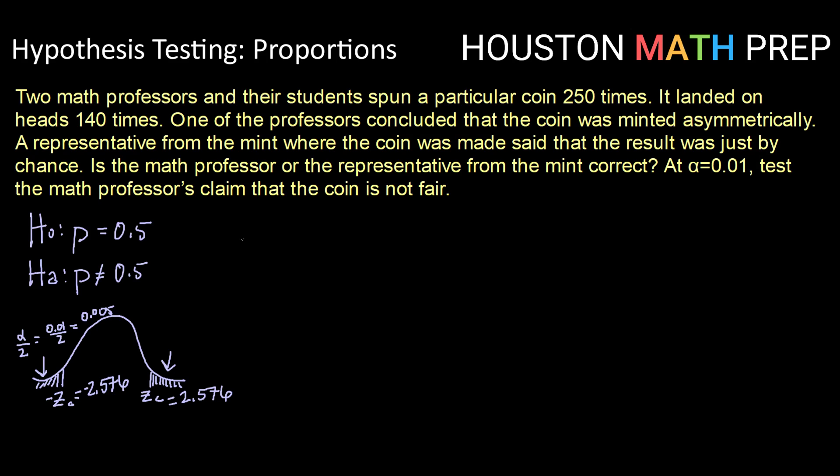And then we need to calculate our test statistic. So our test statistic will be p-hat minus p over the square root of p times 1 minus p all over n. So p-hat will be the number of heads that was found in the sample. That will be 140 divided by the number of times the sample was run, 250.